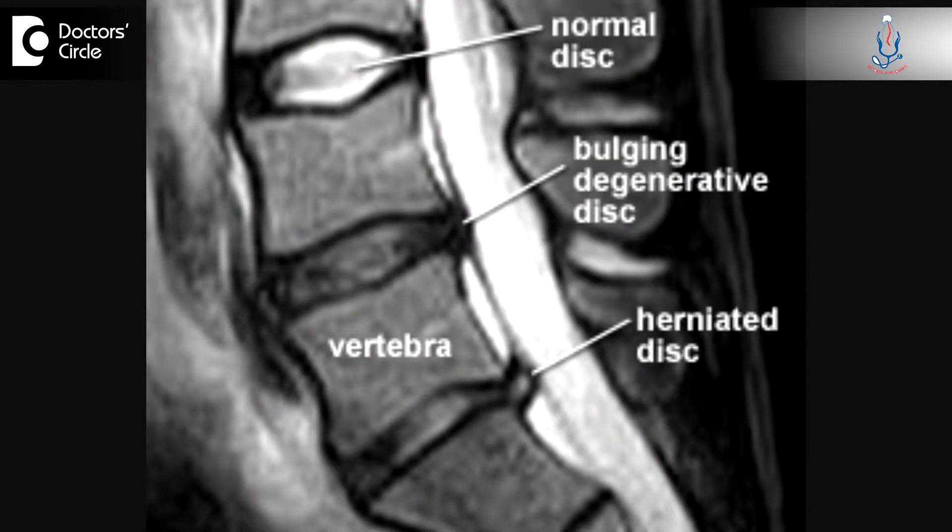When we take a stress x-ray — a standing x-ray in bending forward position and bending backward position — if the bones are stable, meaning there is no movement occurring between the vertebrae, there could be disc prolapse in the MRI, but if there is no movement between the vertebrae, we call that a stable spine.